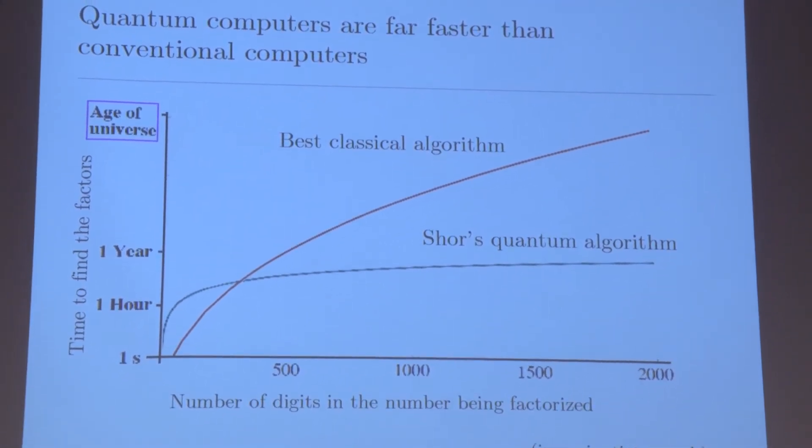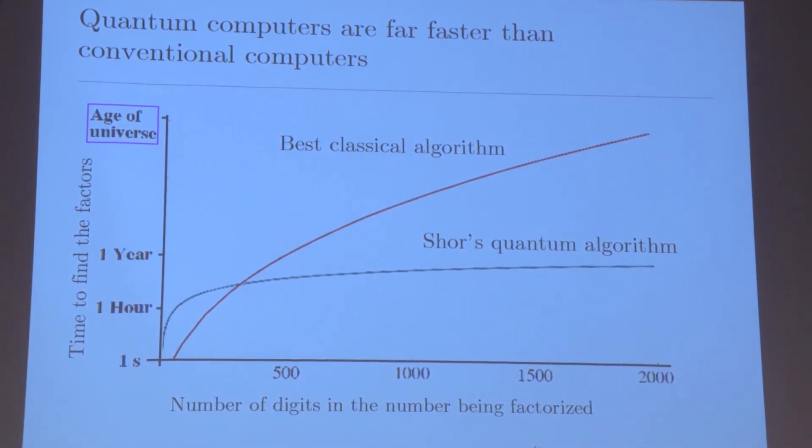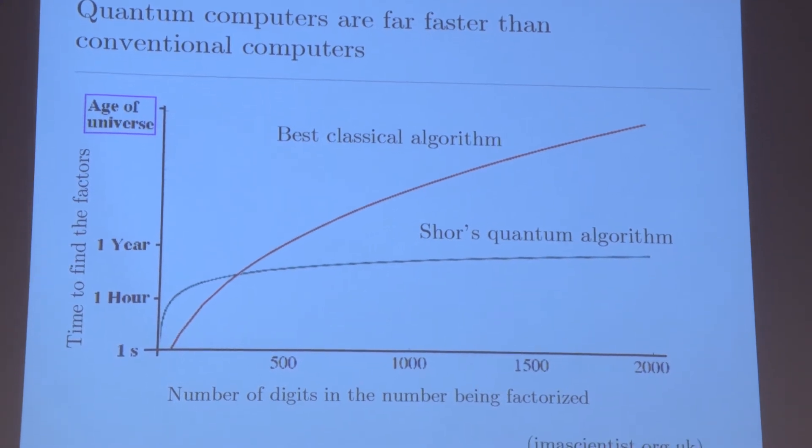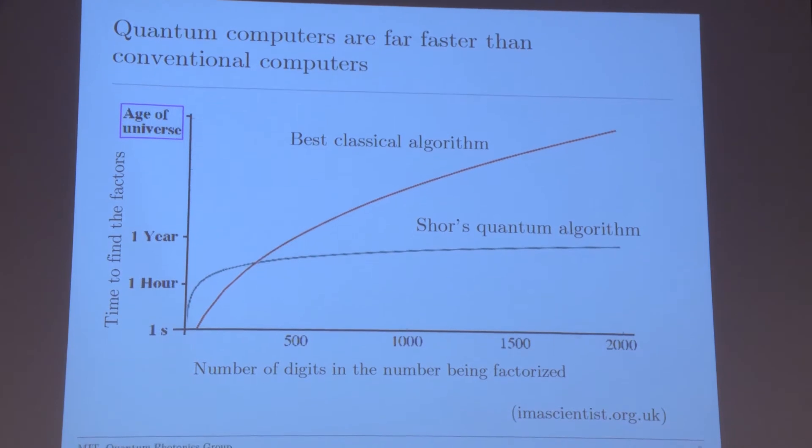This is a plot showing two algorithms for prime factorization. One is Shor's algorithm, and the other one is the best classical algorithm. If you look at the time it takes a computer to factorize a number with 2,000 digits, you really see the power of the quantum computer. The quantum computer can factorize a 2,000 digit number in one year, while a classical computer takes the age of the universe for the same task, so that's about 14 billion times slower.